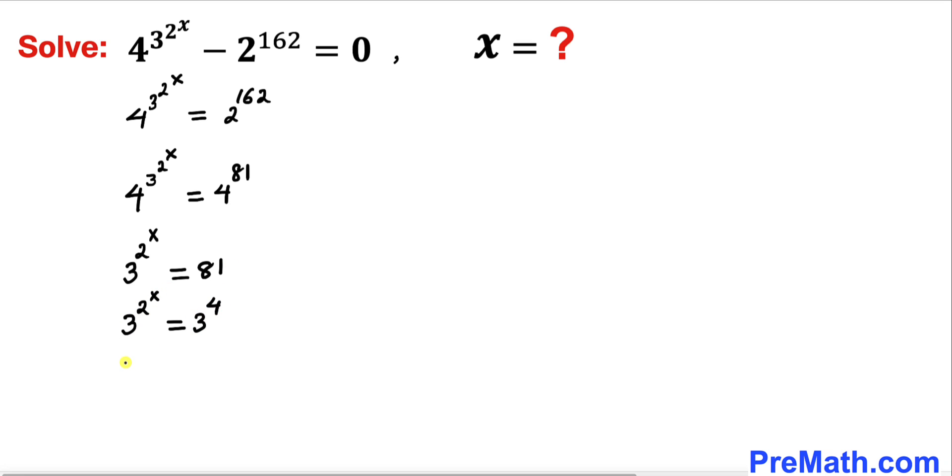Therefore we can write 2^x = 4, or 2^x = 2^2. Once again we can see that our bases on both sides are the same, so we can equate their exponents.